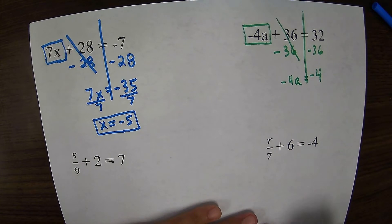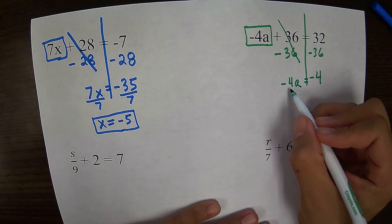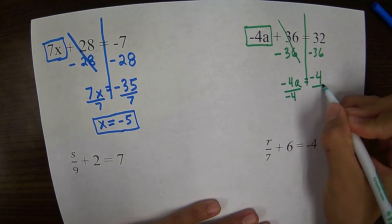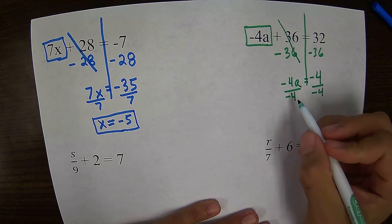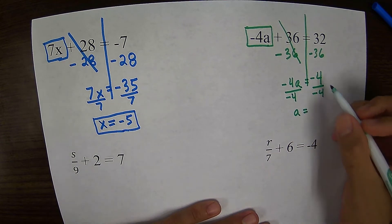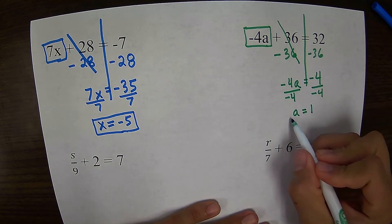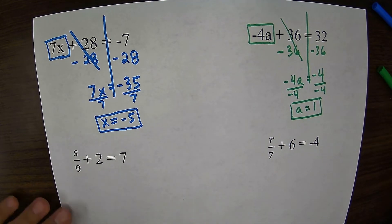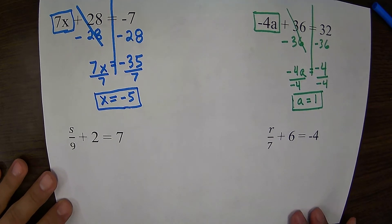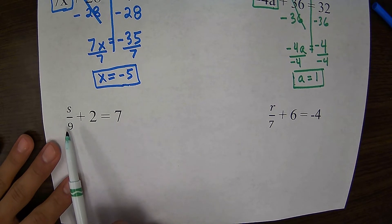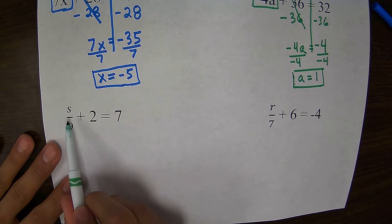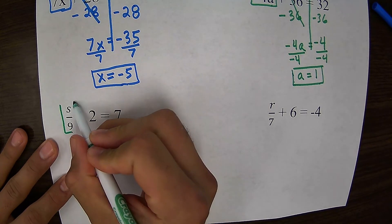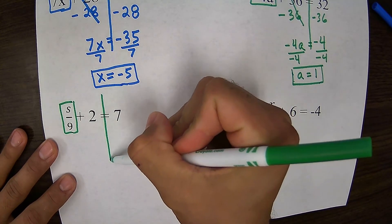I bring down my negative 4a, bring down your equal sign. Since negative 4 is being multiplied by a, I do the opposite operation. I divide by negative 4. Negative 4a divided by negative 4 would just give me a positive a. Negative 4 divided by negative 4 would just give me a positive 1.